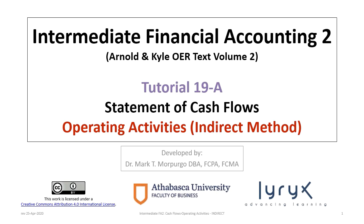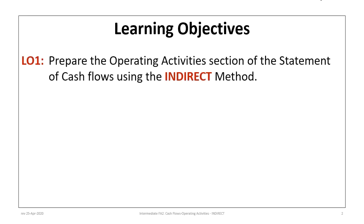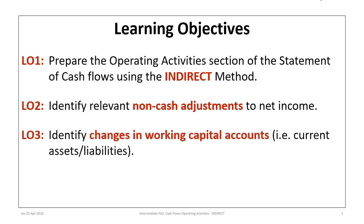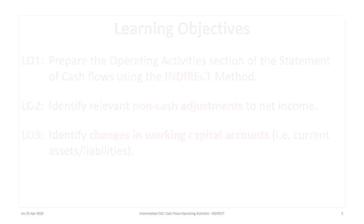Hello and welcome to Intermediate Financial Accounting 2, Tutorial 19a. This is the first in a series of tutorials focused on preparation of the statement of cash flows. This tutorial will illustrate how to prepare the operating activity section using the indirect method. It has three main learning objectives: prepare the operating activity section using the indirect method, identify relevant non-cash adjustments to net income, and identify changes in working capital accounts, i.e., current assets and current liabilities.